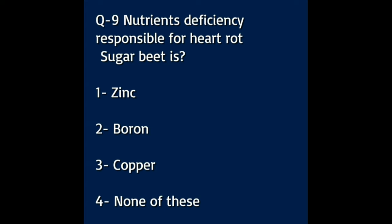Question number nine: nutrient deficiency responsible for heart rot in sugar beet is — Option A: zinc. Option B: boron. Option C: copper. Option D: none of these. The answer to this question is boron.